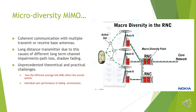In macrodiversity MIMO, it is basically used for long distance transmission. In this, coherent communication with multiple transmit or receive based antennas are used. Unprecedented theoretical and practical challenges are met, such as how the different average link SNRs affect the overall system and the individual performance in the fading environment.